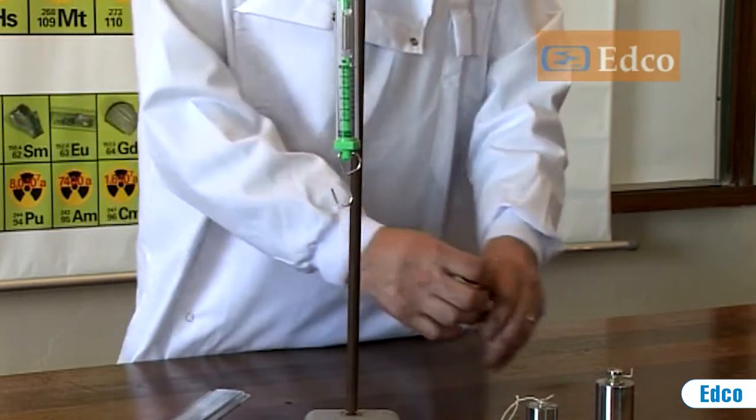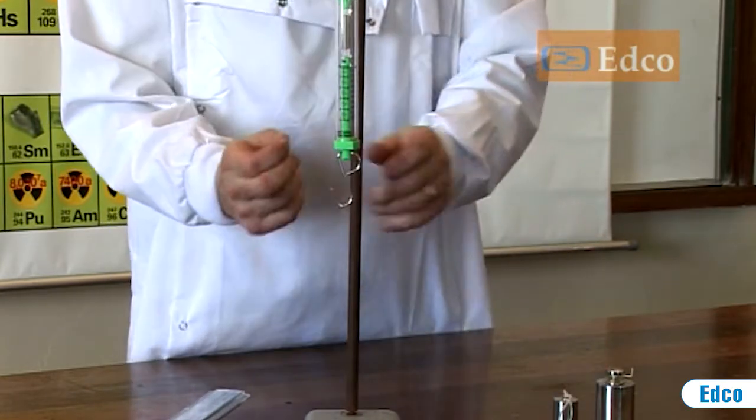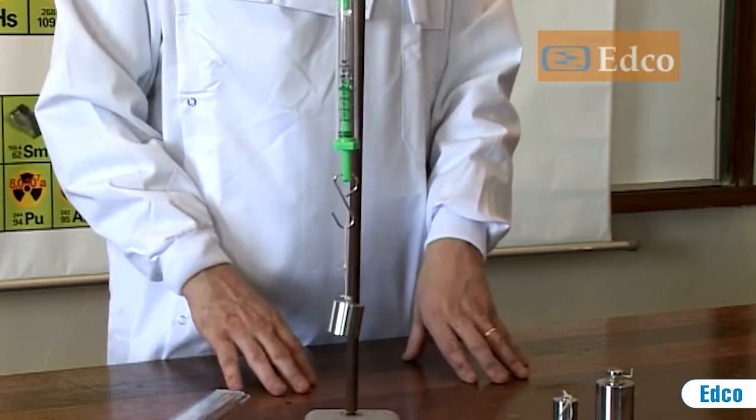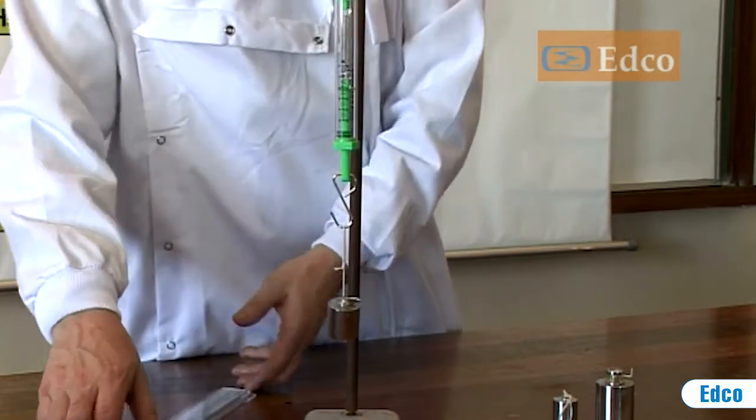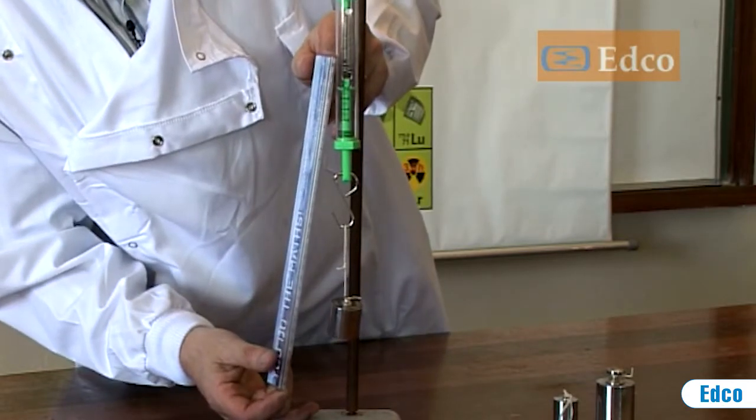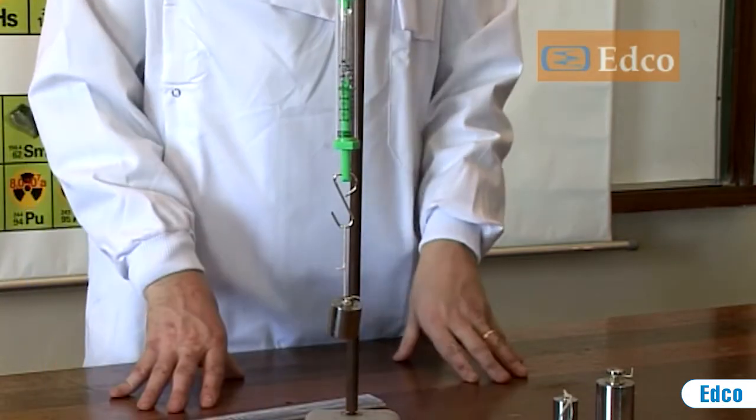If we replace the one Newton weight with a two Newton weight we notice that the extension of the spring is greater. If we measure the new extension of the spring we notice that there is an extension of two centimeters.